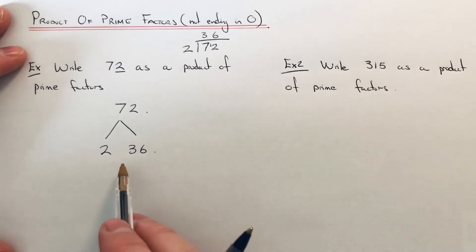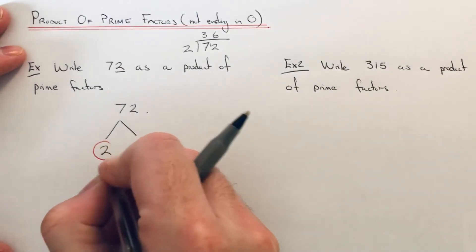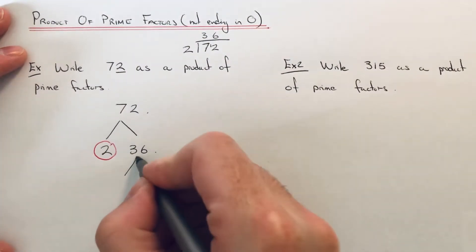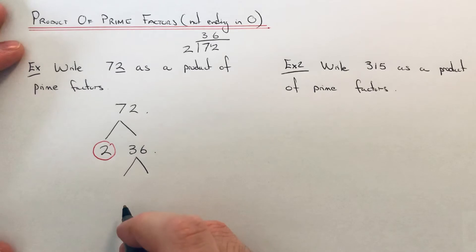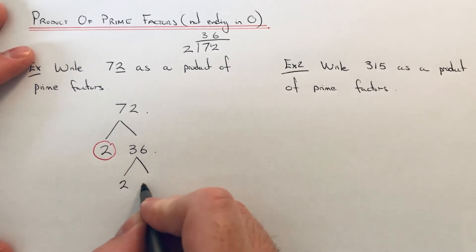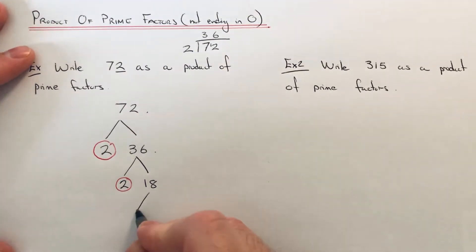If we get a prime number I'm going to circle it. If it's not a prime number I'm going to split it up. So 2 is a prime number. 36 is not a prime number because it's in the 2 times table. Half of 36 is 18, so 2 times 18 gives 36.